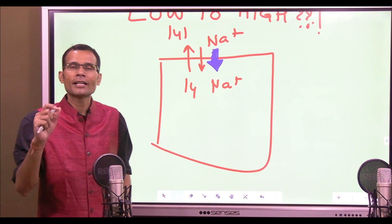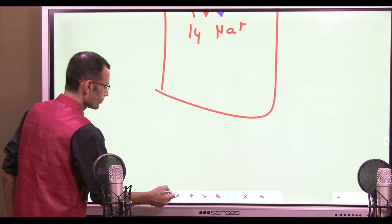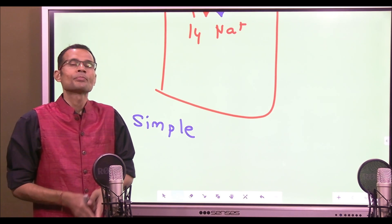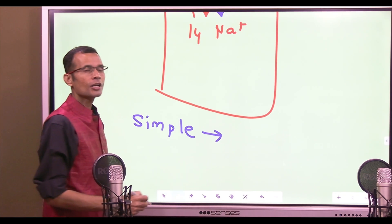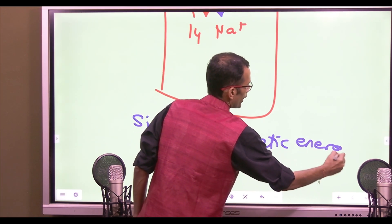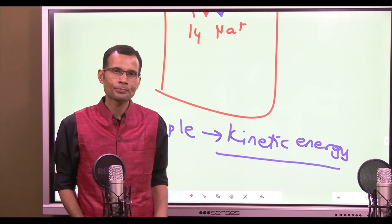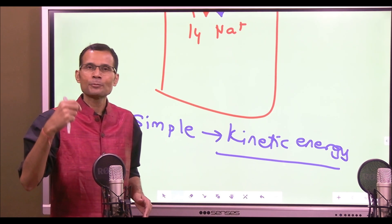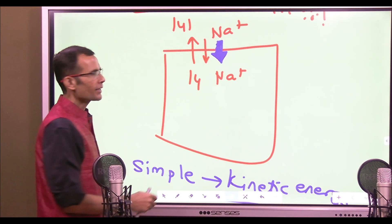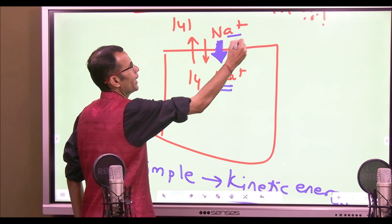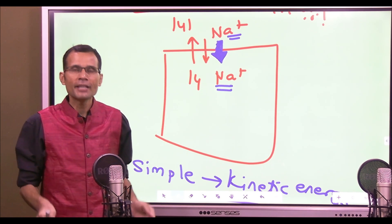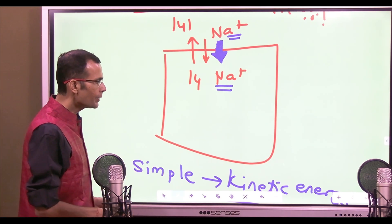Some students were still not convinced, so I had to explain the concept further. Simple diffusion — take sodium ions transported through channels. Simple diffusion occurs by virtue of the kinetic energy of the particles. Kinetic energy is responsible for Brownian movement; it can go randomly in any direction. Kinetic energy is present for sodium both inside and outside, so sodium can move in any direction and therefore can go from high to low or low to high.